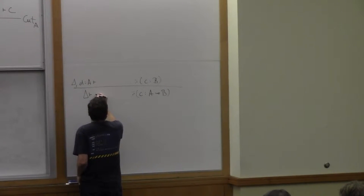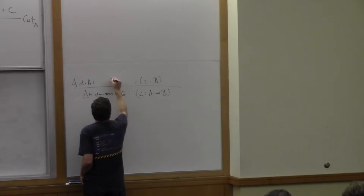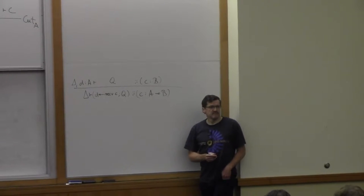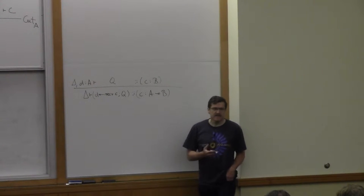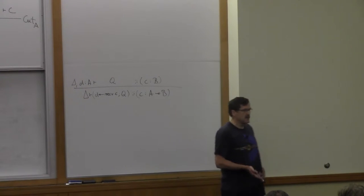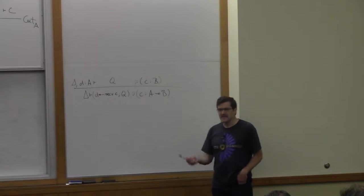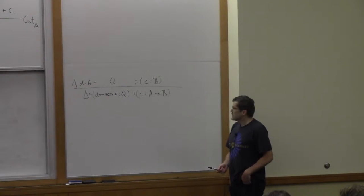So this is kind of an input. So we say that you receive D along channel C and continue with Q and Q is going to do this. So it corresponds to an input along a channel.